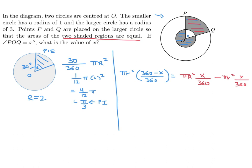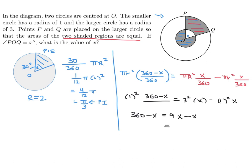Good news: pi cancels throughout, and the 360 denominators also cancel. Small r is 1 squared, big R is 3 squared. So we get: (360 − X) = 9X − X, which gives 360 = 9X, and therefore X = 360 divided by 9, which is 40. The answer is 40 degrees.